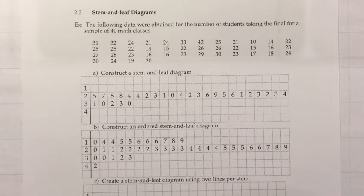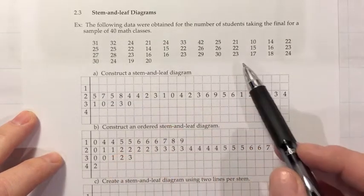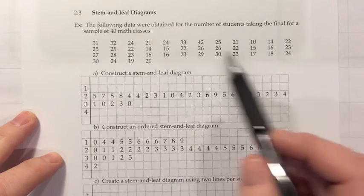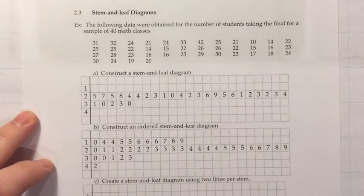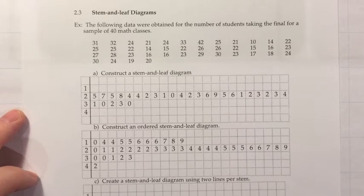The following data were obtained for the number of students taking the final for a sample of 40 math classes. So we went out and randomly sampled 40 math classes. We showed up on the day of the final and we looked in to see how many people were there to take the final. In one class it was 31 students, in another one it was 23 and so on. And we have 40 different classes there. So that's the raw data. And in part A, they want us to construct a stem and leaf diagram for that data.